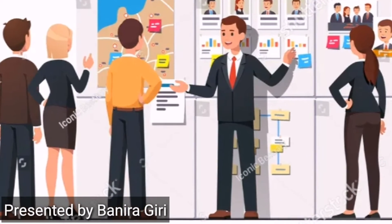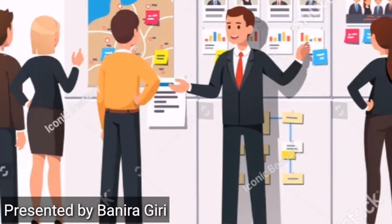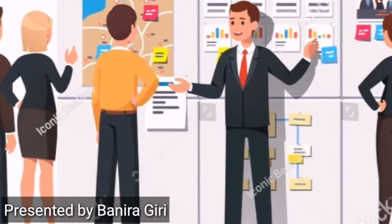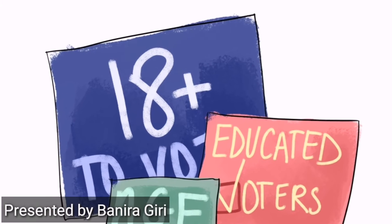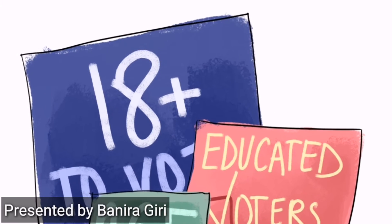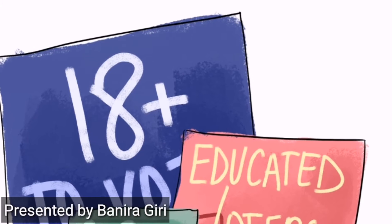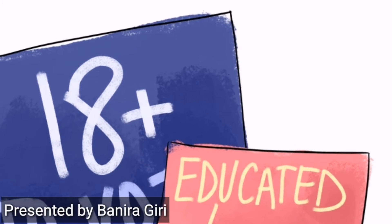Now let's move to the voting process. For voting, one should have crossed the age of 18 years and should have the voter ID to cast the vote.